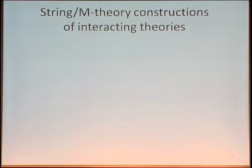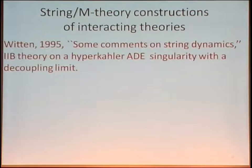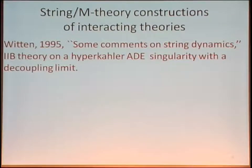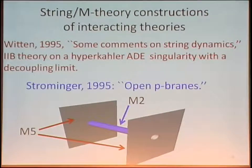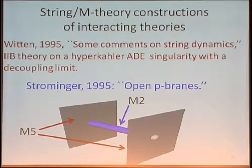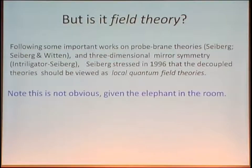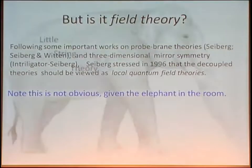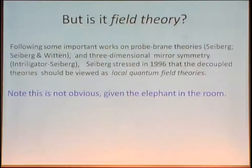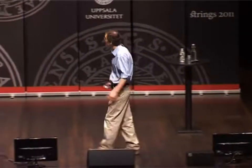Our focus today is more on the interacting theories. The history of these goes back to a remarkably prescient paper of Witten's, in which he studies the type IIB theory on a hyperkähler ADE singularity in a certain decoupling limit. In this decoupling limit, there are light strings. We try to decouple gravity, taking the Planck mass to infinity. Shortly thereafter, Strominger wrote a beautiful paper pointing out that open M2 branes can end on M5 branes, so when we have parallel M5 branes coming close together, we have light dynamical strings, and again we can try and take a decoupling limit.